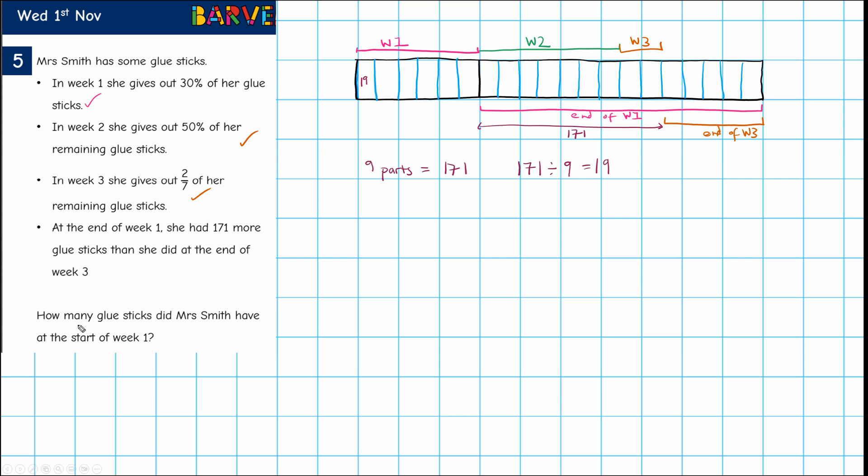So each of these parts has a value of 19. And what are we asked? We're asked how many glue sticks did Mrs Smith have at the start of week one? Well, in week one that's all of this, this is the total. Now if you remember I started off with 10 parts. I now have 20 parts here. I think the easiest way to do this is 19 times 2 and that gives me 38. So this is 38, I know I have 10 of those. So 38 times 10 gives me 380. So that's my answer.